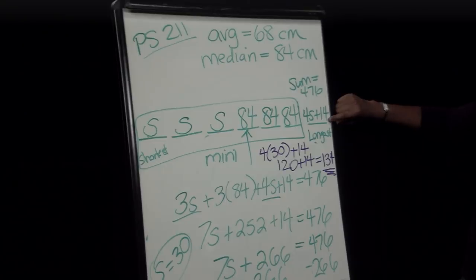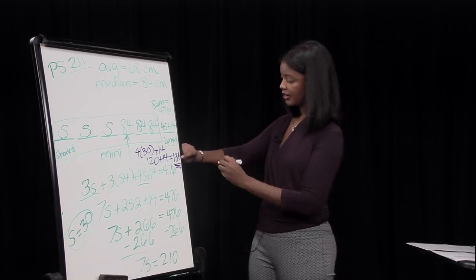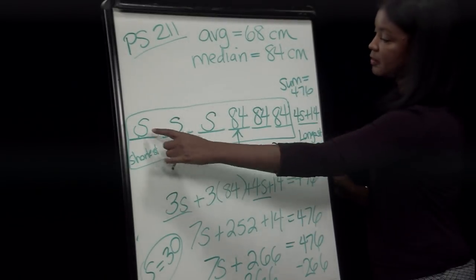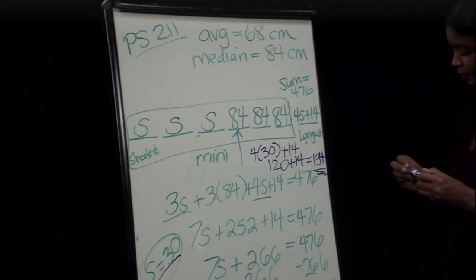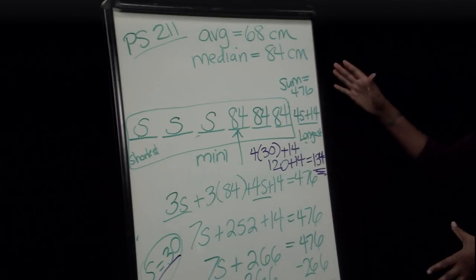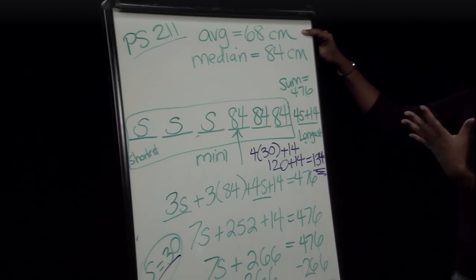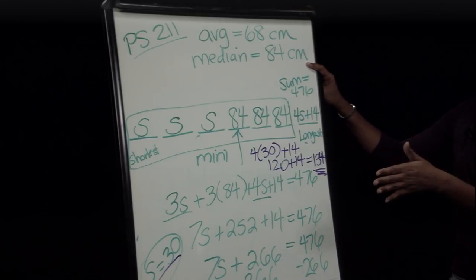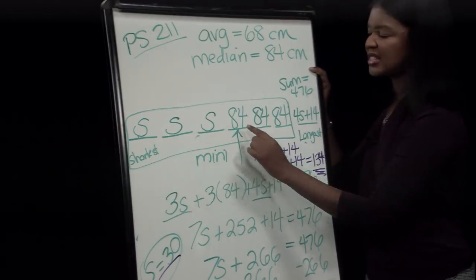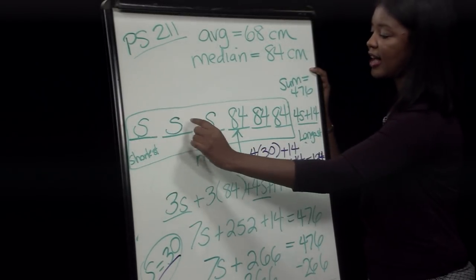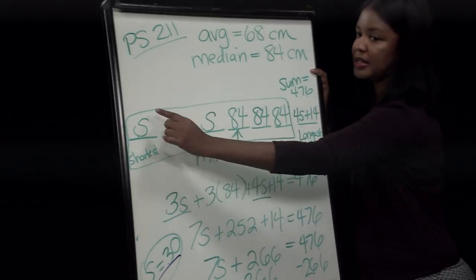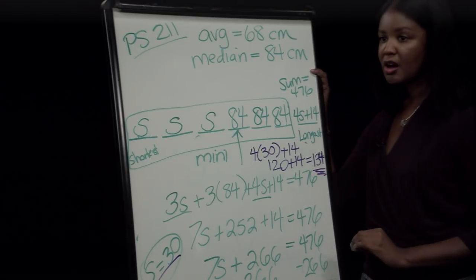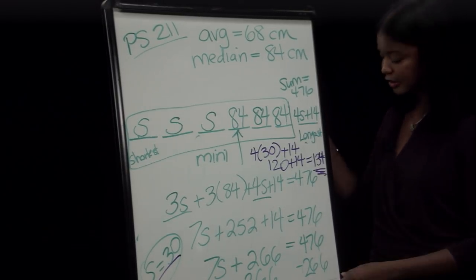The maximum length of the longest piece of rope is 134 centimeters, and the minimum length of the shortest piece is 30 centimeters. To recap: we used the average formula to find the sum, identified the median as the middle value, illustrated the 7 pieces, then minimized six pieces to maximize the seventh, solving for S and then plugging in to find the longest piece.